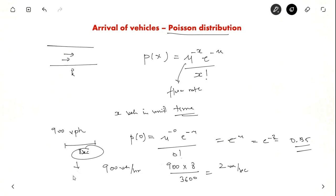Suppose if you wanted to know for 30 seconds then you have to find out the flow rate for every 30 seconds. Here it is 2 vehicles per 8 seconds. Suppose if you want to find for 30 seconds it is 900 into 30 divided by 3600. So you will get the probability.